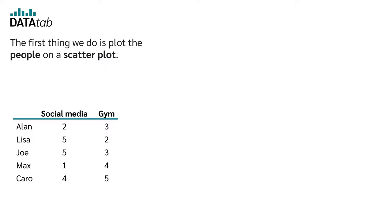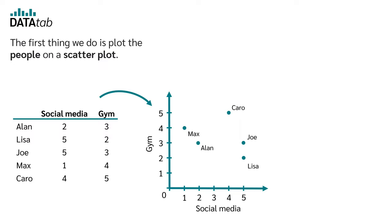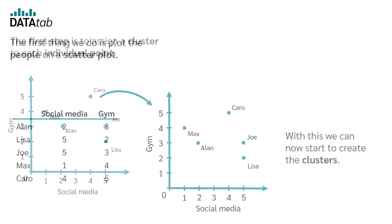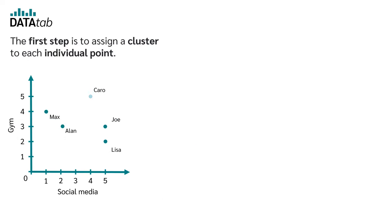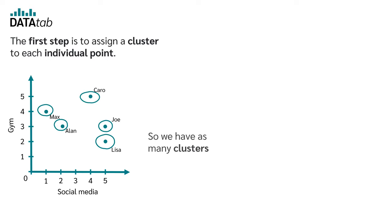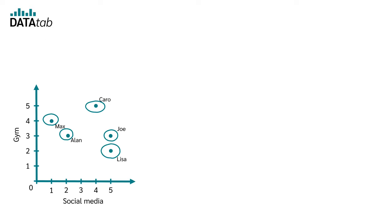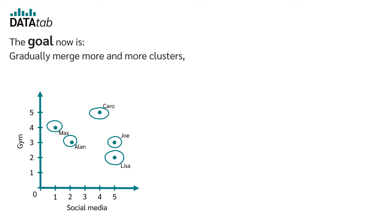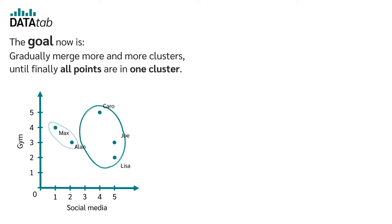The first thing we do is plot the people on a scatterplot. With this, we can now start to create the clusters. The first step is to assign a cluster to each individual point, so we have as many clusters as we have people. The goal now is to gradually merge more and more clusters until finally all points are in one cluster.